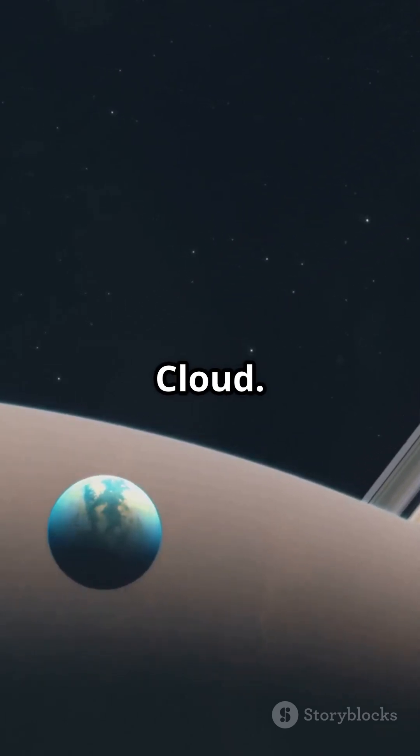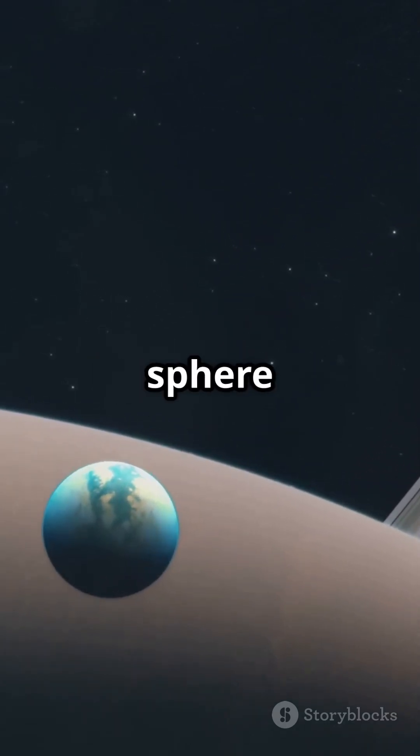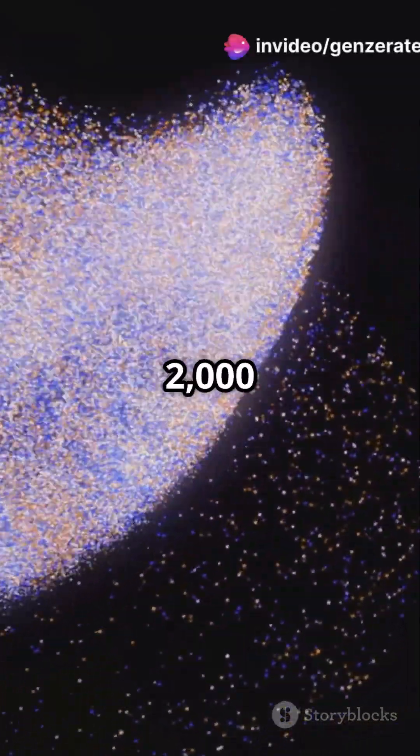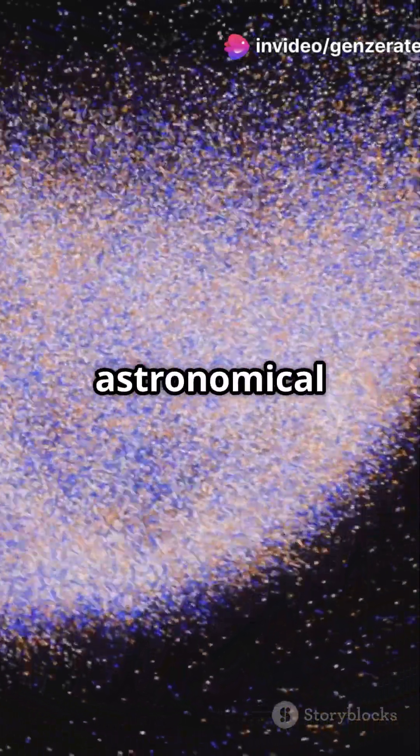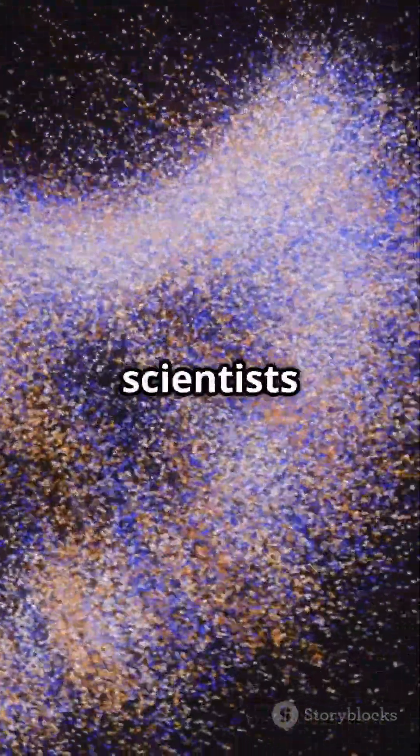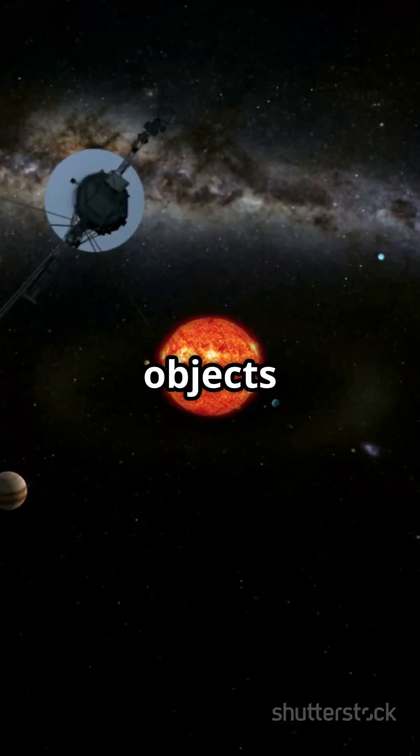Now let's talk about the Oort Cloud. This hypothetical sphere of icy bodies marks the boundary of our solar system around 2,000 to 100,000 astronomical units from the sun. It's influenced by the Milky Way and passing stars, but scientists haven't seen any Oort Cloud objects yet.